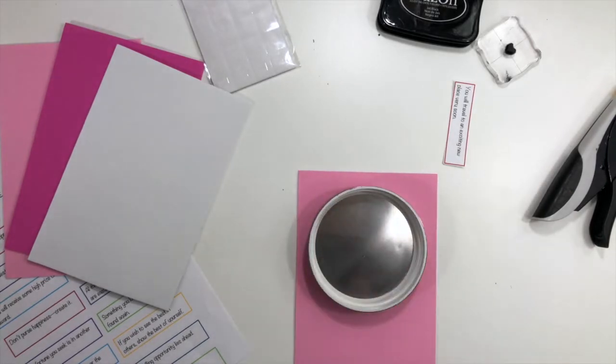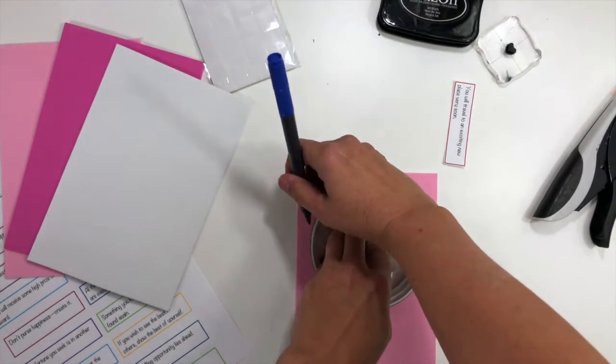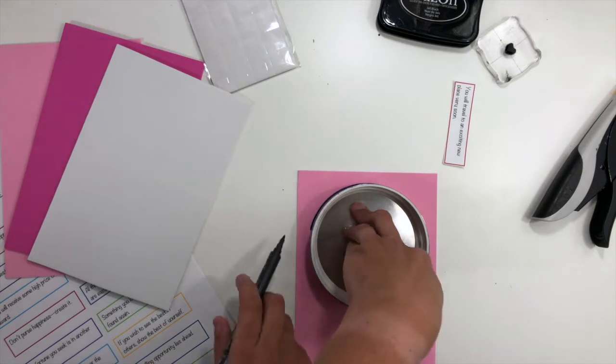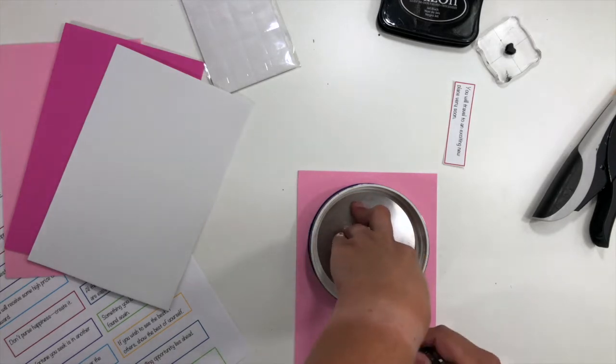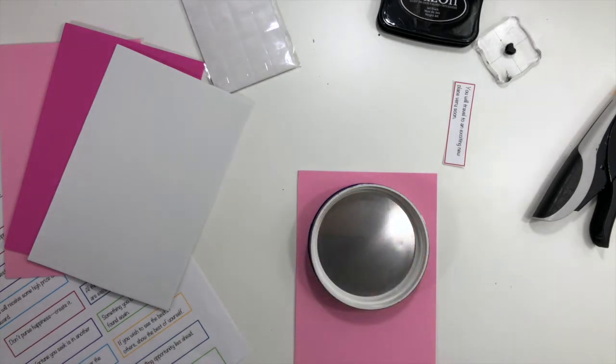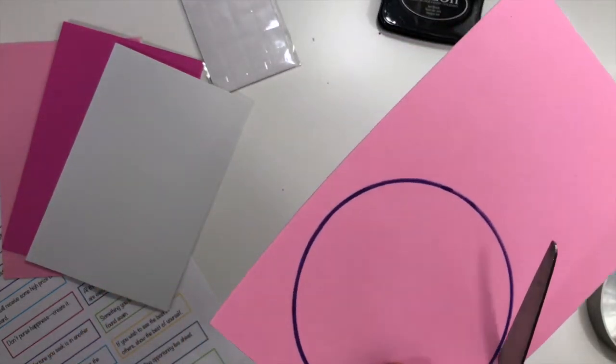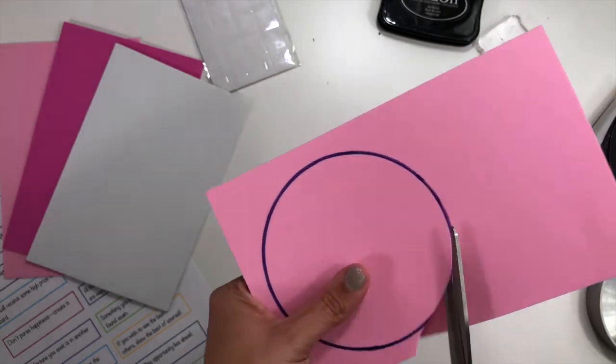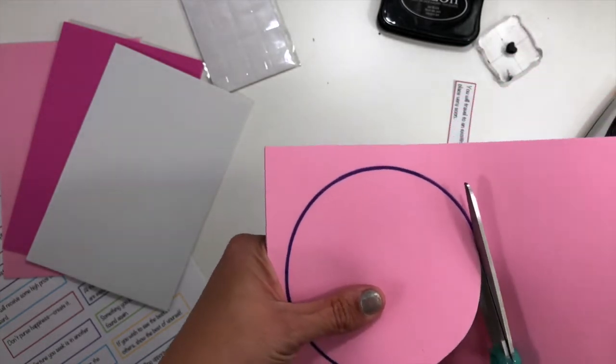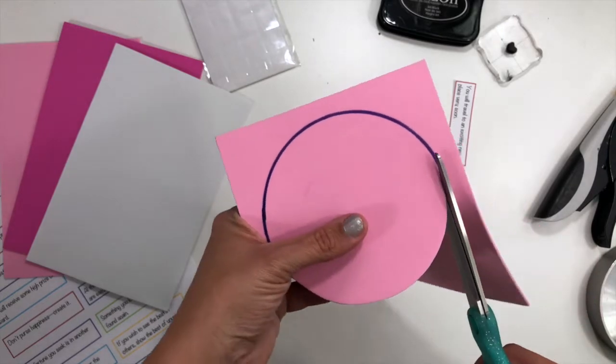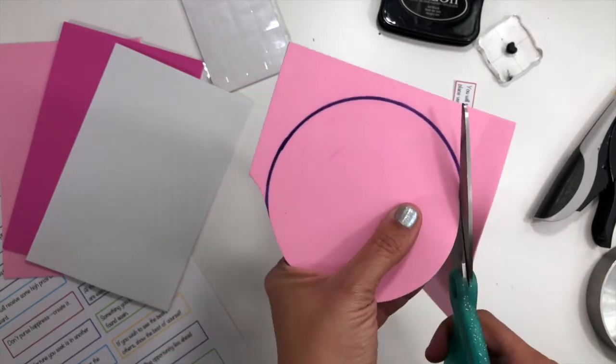You could definitely do this with a stencil or cut this on your die cut machine if you have circle dies. I'm just going to cut it out right to the inside because I don't want that purple line I just made to show. It doesn't have to be an exact size, you can definitely make different size little fortune cookies if you want.